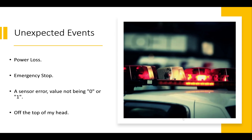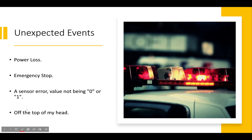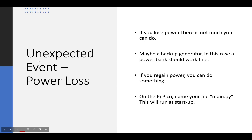Next we have unexpected events. The ones I thought of are: power loss, emergency stop, and a sensor value not being zero or one. A sensor value not being zero or one is very unlikely to happen, but we need to plan for it and we get marks for planning for unexpected events. For power loss, if you lose power there's not much you can do immediately — maybe a backup generator in a factory, or a power bank since we only need five volts to run the Raspberry Pi Pico. If you regain power, you can handle it programmatically.